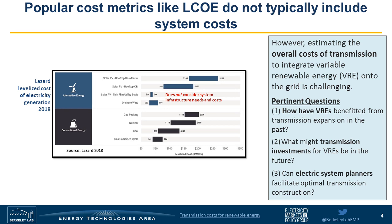The pertinent questions for this research were: how have variable renewable energy resources benefited from transmission expansion in the past? What might transmission investments for variable renewable energy be in the future? And can electric system planners facilitate optimal transmission construction? This research mainly focused on answering questions one and two — that's what we'll cover in this presentation. But we do think this work has important implications for that third question as well.